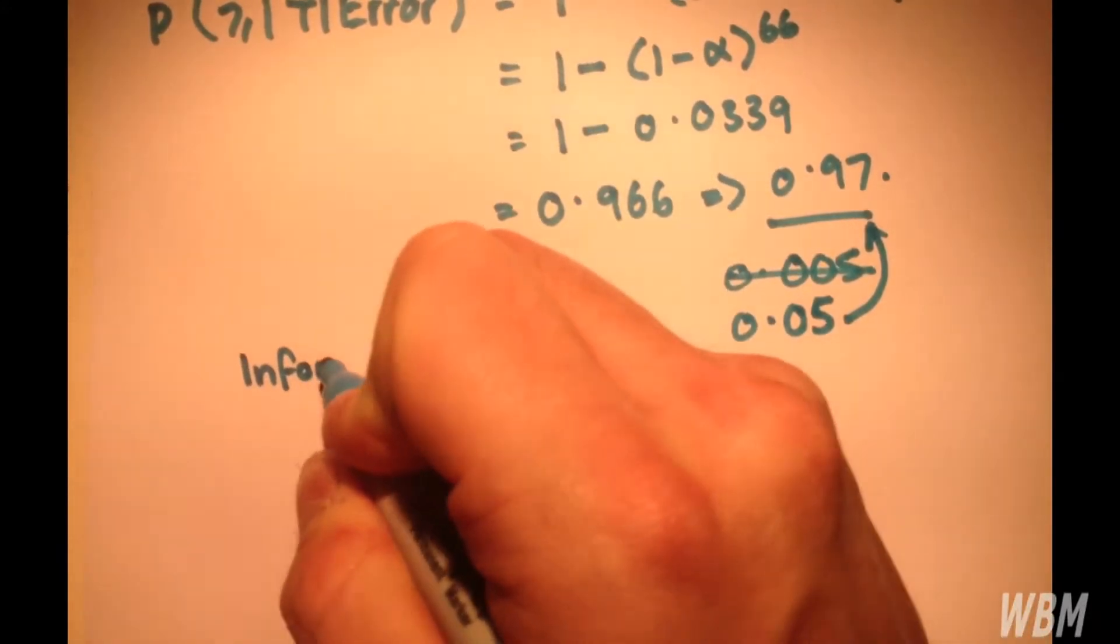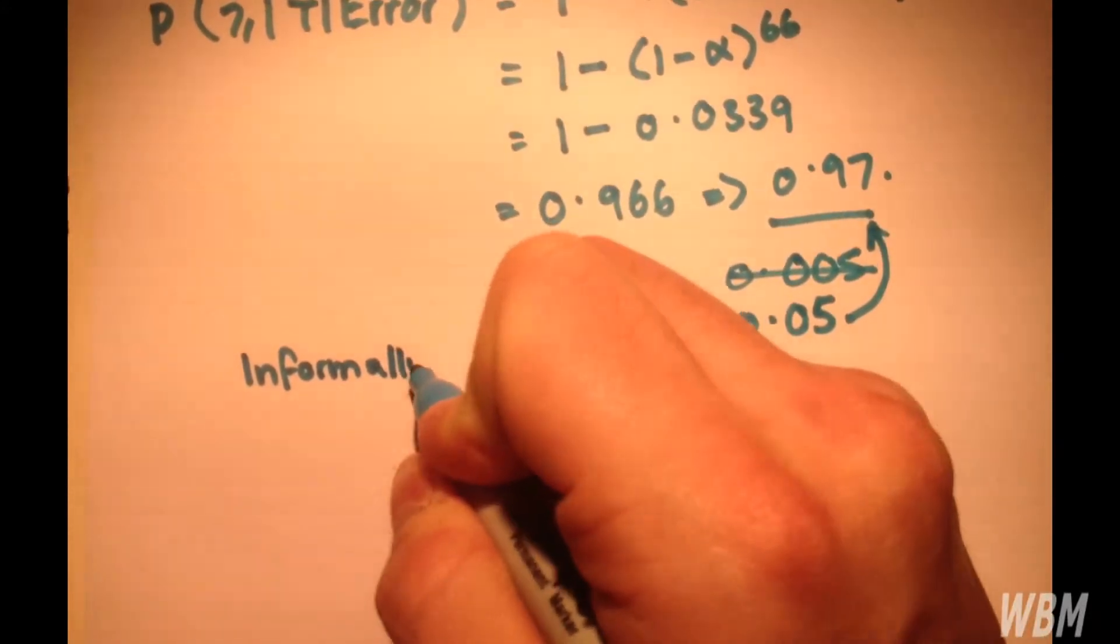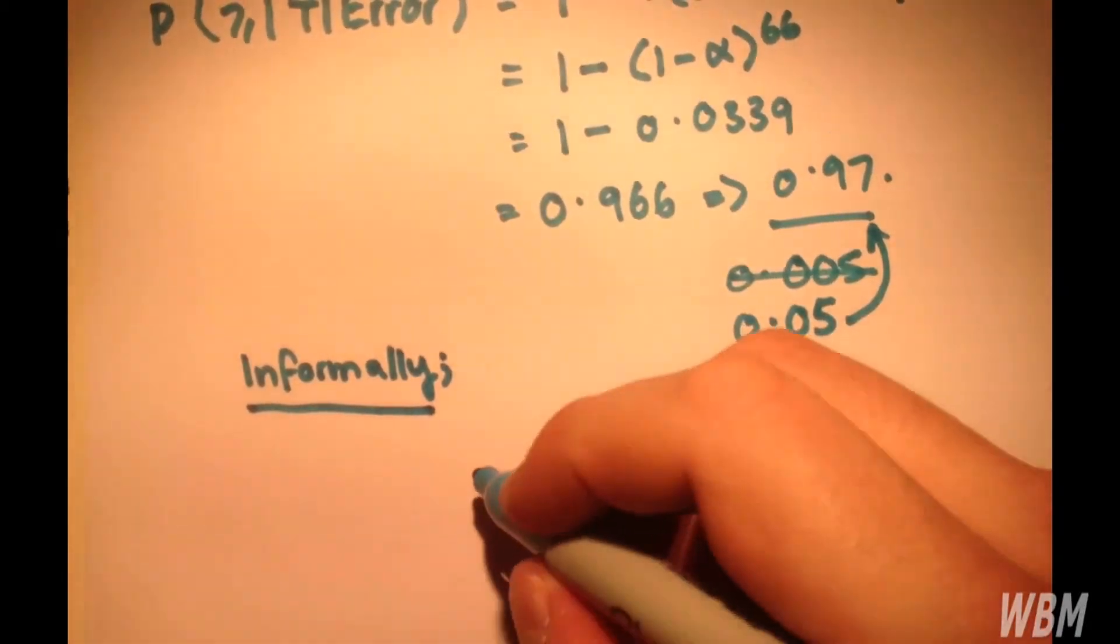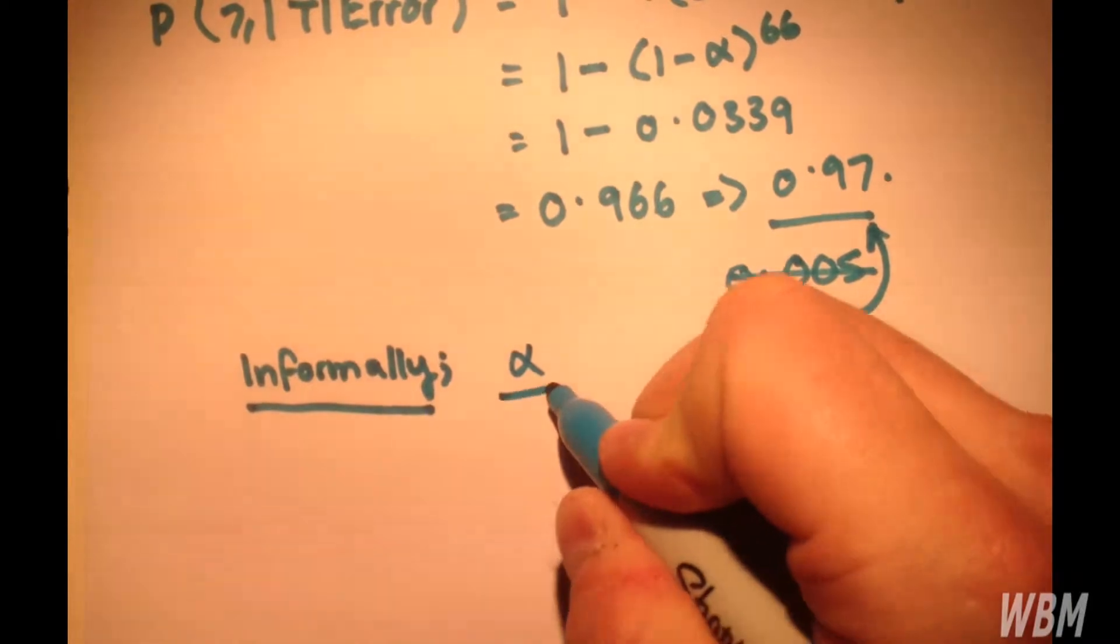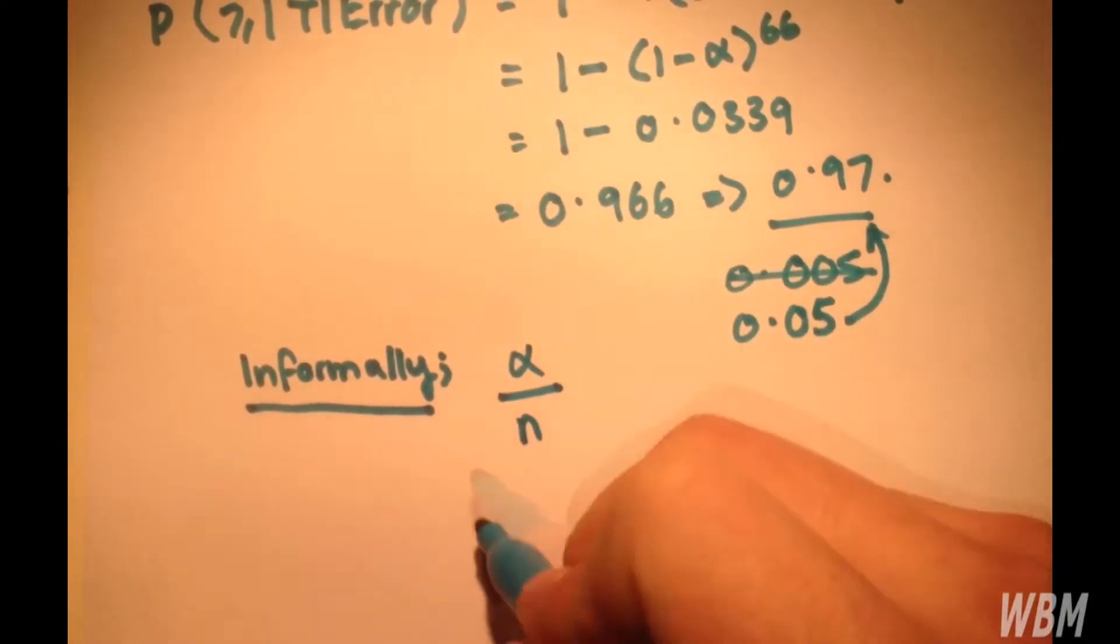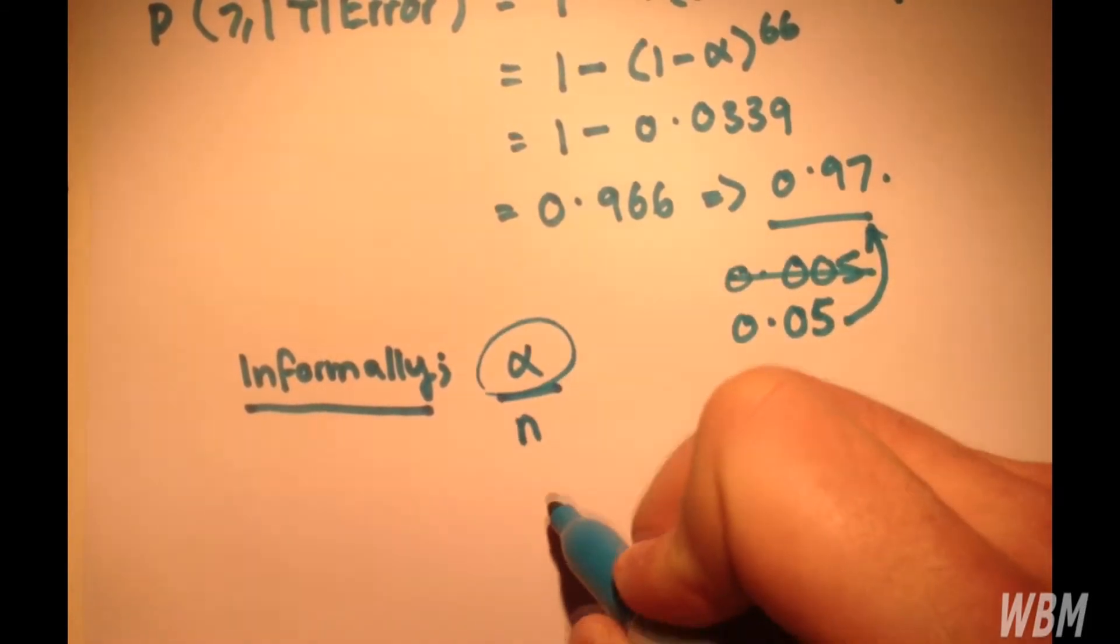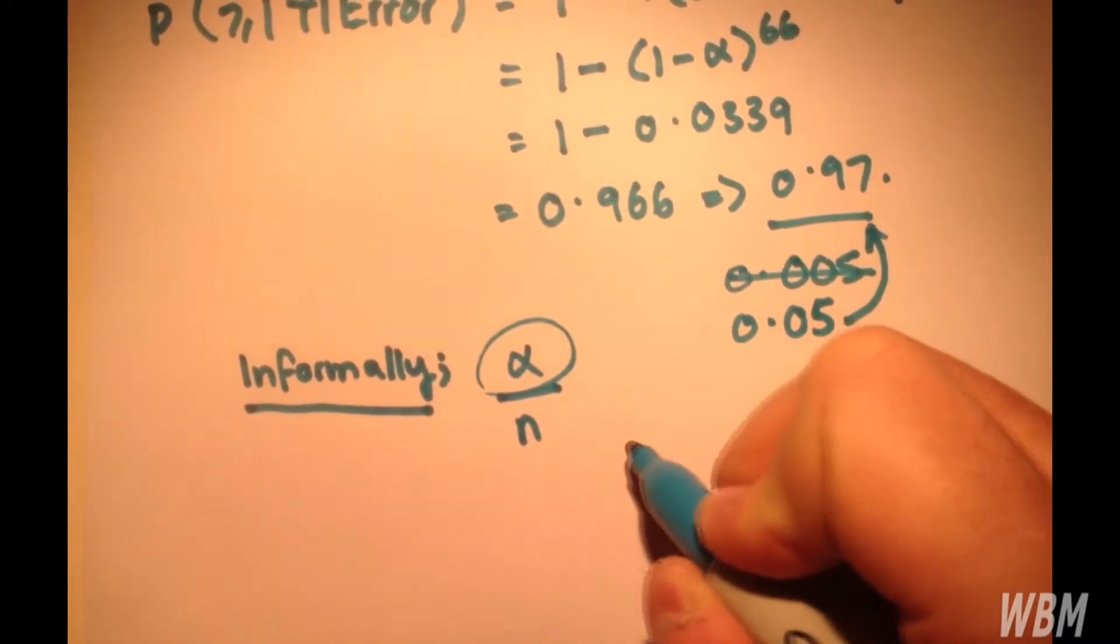So, informally, so this isn't mathematically correct, informally we'll have alpha over n. This is what we test as. We don't test with alpha, we test with alpha over n.